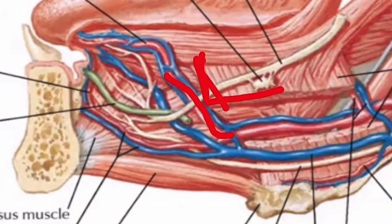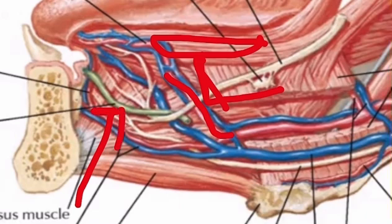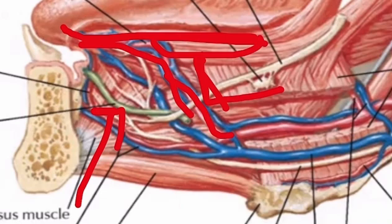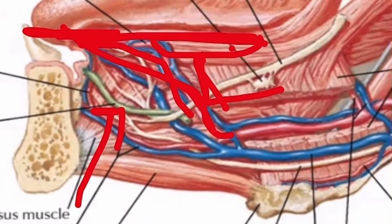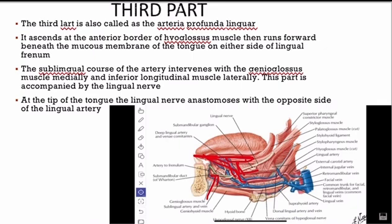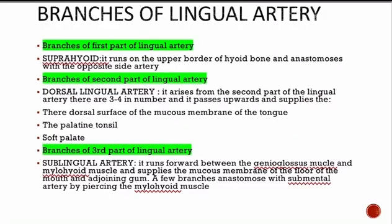The third part runs from the anterior border of the hyoglossus muscle. It has the inferior constrictor muscle medially and the genioglossus muscle laterally. Then it runs upward into the mucous membrane of the tongue. At the lingual frenum, one artery comes from one side and another from the other side, and both arteries anastomose at the tip of the tongue.